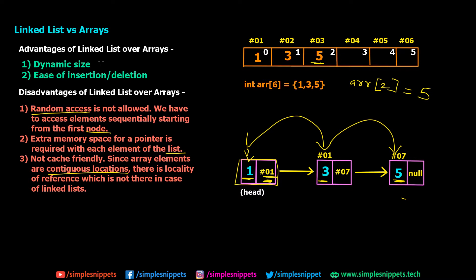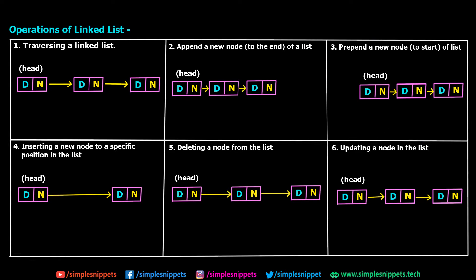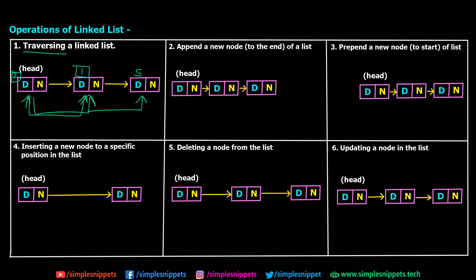Let's see the operations of linked list. When it comes to operations, we have six major standard operations. The first is traversing a linked list — starting from the head node, which is always the first node, and moving on to the next one. If you have values 5, 1, and 2, and you want to find value 1, you start from the first node, check the value, and if it's equal to 1 you print or use it. If not, you go to the next node. You always start from the head node.